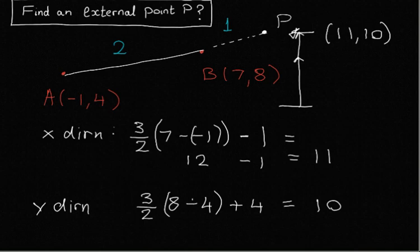Okay, so the external point P is 11 in the x direction and 10 in the y direction. Thank you for joining Maths Plus.